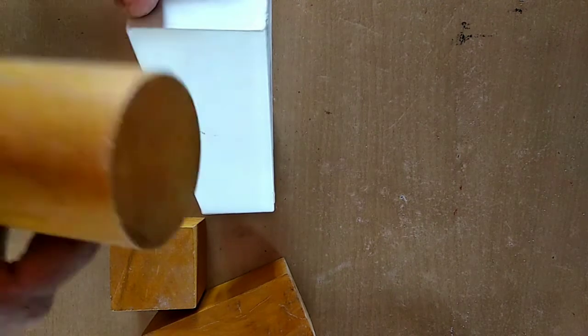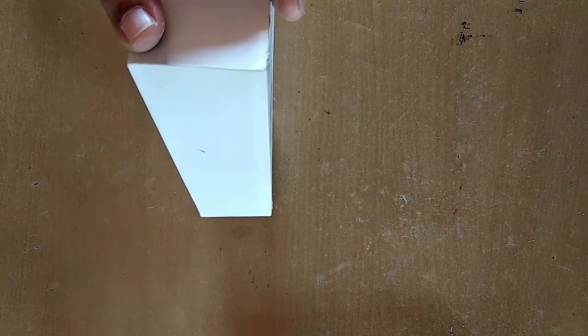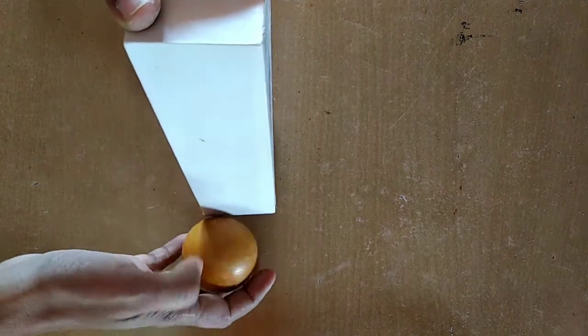Sphere has a curved surface. It can roll. Cylinder has curved surface. It can roll.